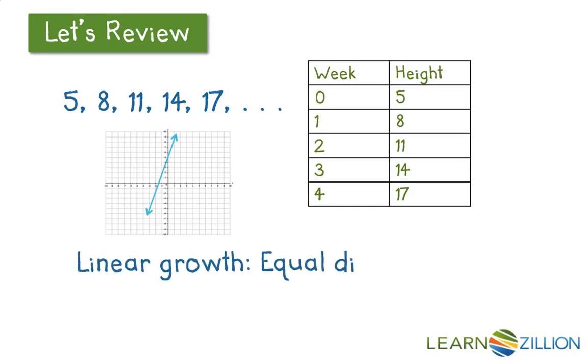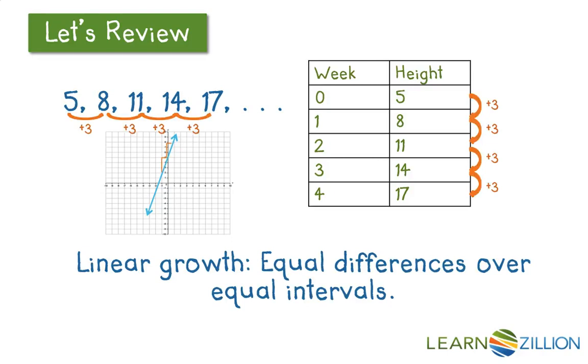Regardless of how we show our linear growth, we know that linear growth shows equal differences over equal intervals. If we look at this selection here, they all show the same different kind of linear growth. They're all increasing by 3, regardless of how we're showing them.